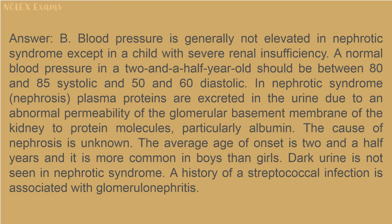Answer: B. Blood pressure is generally not elevated in nephrotic syndrome except in a child with severe renal insufficiency — a normal blood pressure in a two-and-a-half-year-old should be between 80–85 systolic and 50–60 diastolic. In nephrotic syndrome, plasma proteins are excreted in the urine due to abnormal permeability of the glomerular basement membrane to protein molecules, particularly albumin. The cause of nephrosis is unknown; the average age of onset is two and a half years and it is more common in boys. Dark urine is not seen in nephrotic syndrome. A history of streptococcal infection is associated with glomerulonephritis.